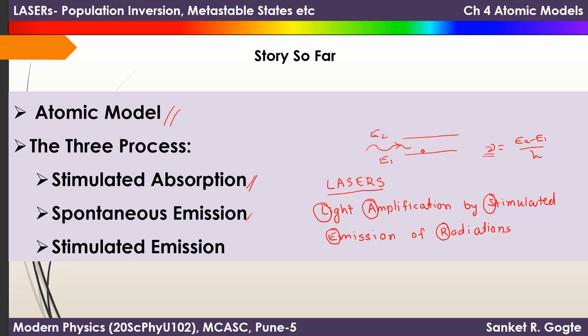The next process we discussed is spontaneous emission. Suppose we have a system with two energy levels E2 and E1, and the system is in the excited state E2. The tendency of this system is to de-excite to energy state E1, and when it de-excites it emits a photon whose frequency is again (E2 minus E1) divided by h. So those are the two processes of stimulated absorption and spontaneous emission.